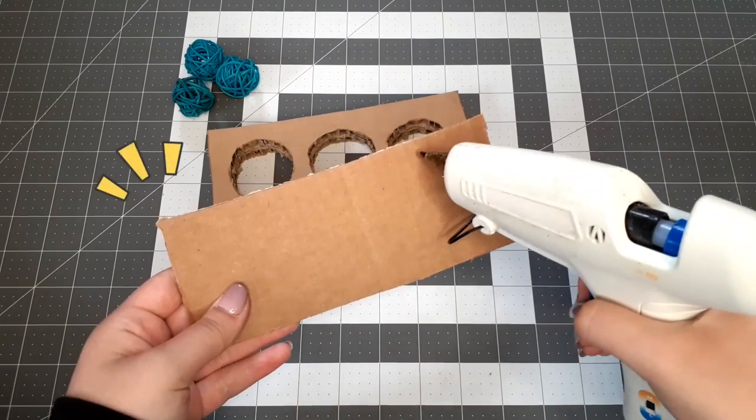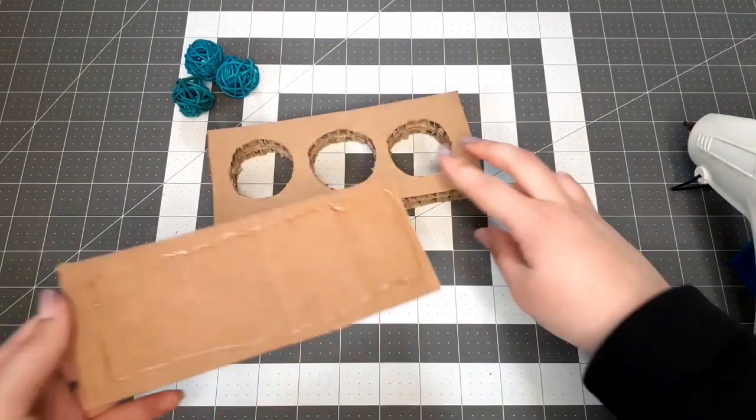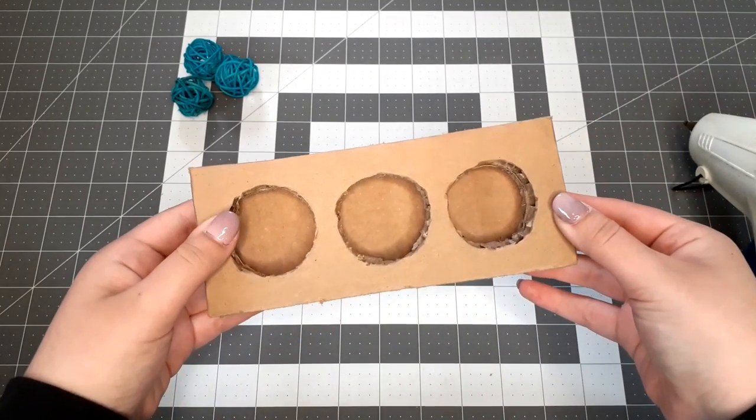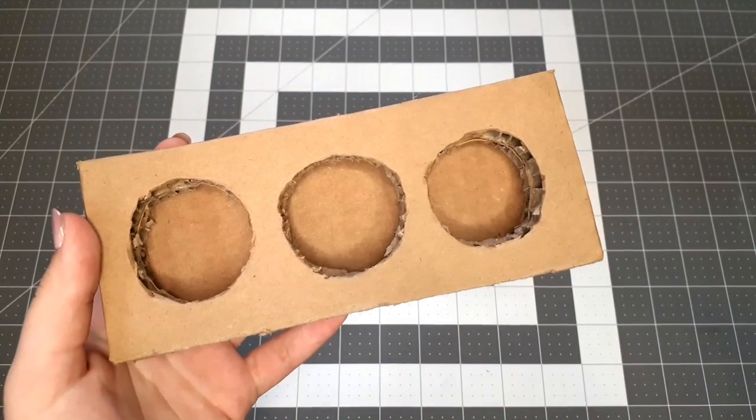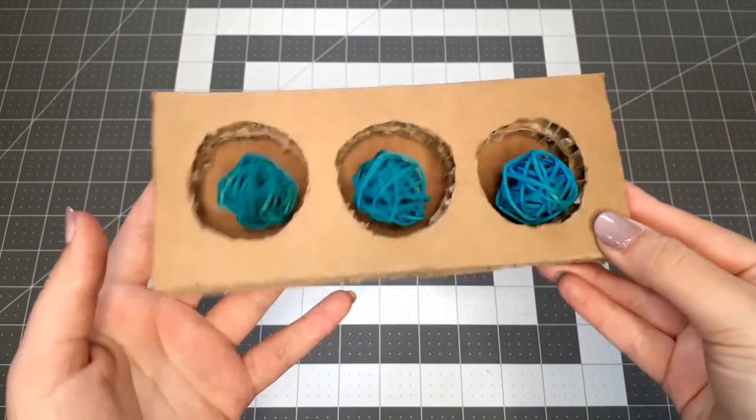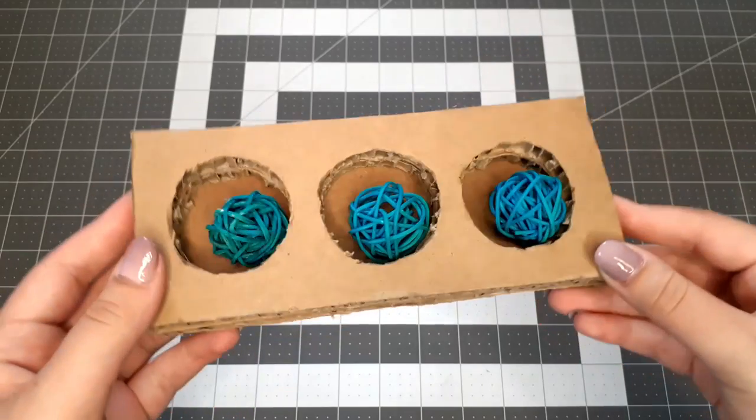Once you're done cutting everything out, take the thin piece of cardboard and glue it to the bottom. Place a wicker ball into each one of the holes, and there you go. This boredom breaker is finished. If you put some food into the holes, your hamster will have to push the wicker balls out of the way in order to get to it.